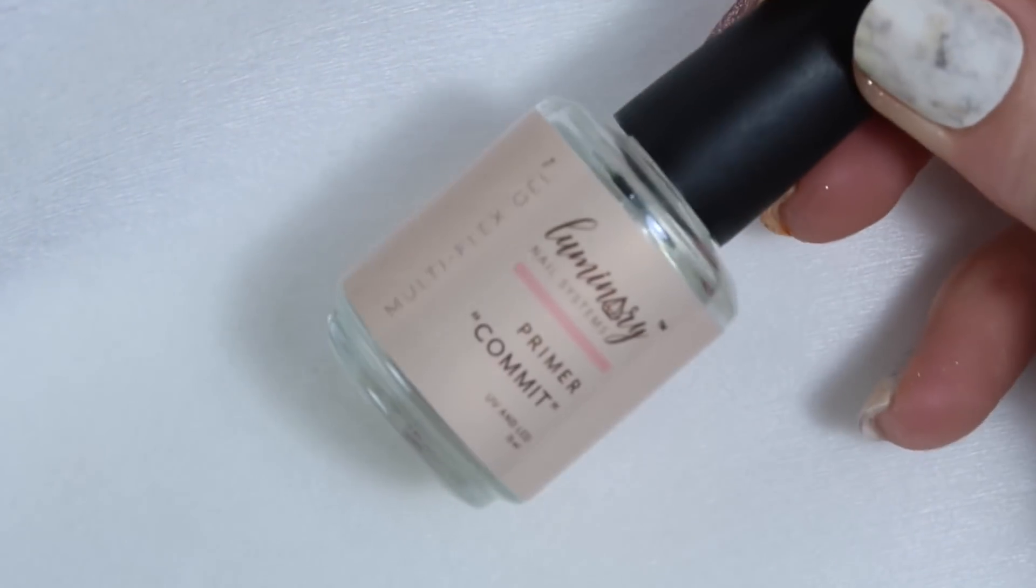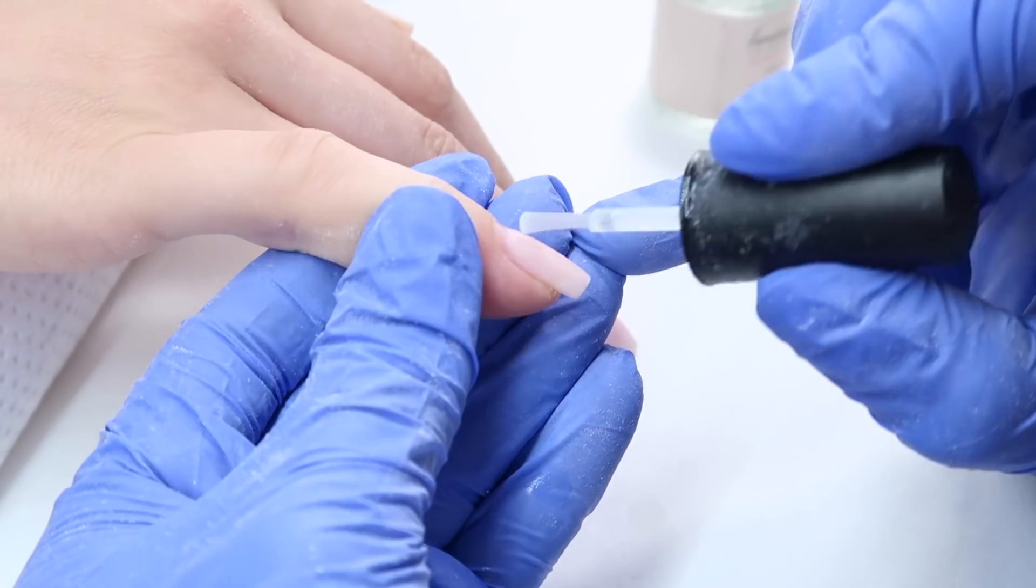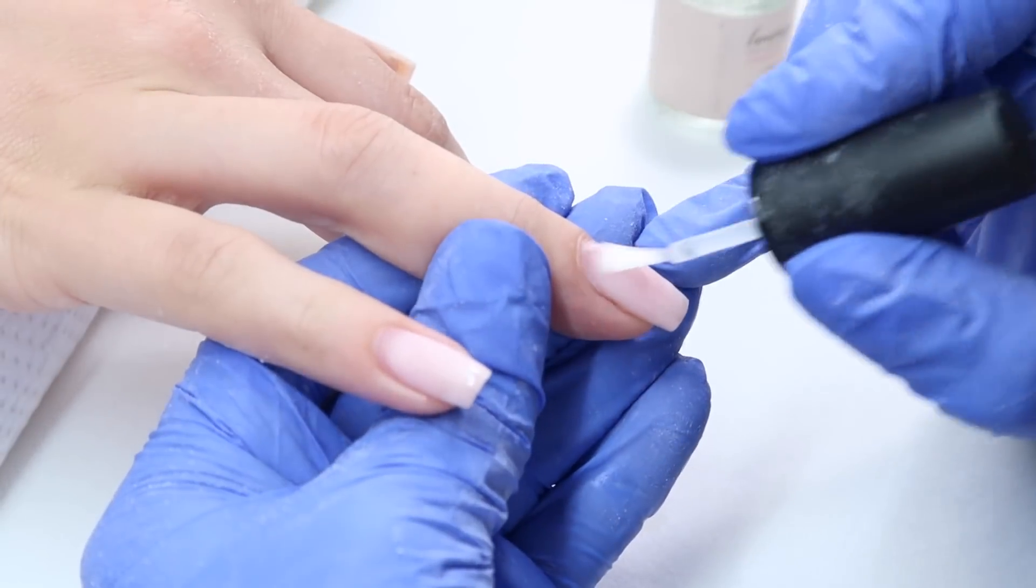That's how the nails look. I'm going to come in with some primer, so I'm going to be using the Luminary Commit. You only need a thin layer right on the regrowth area.